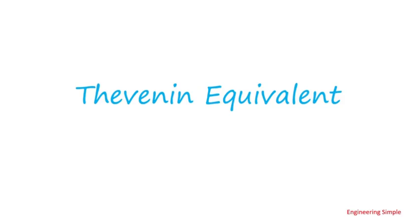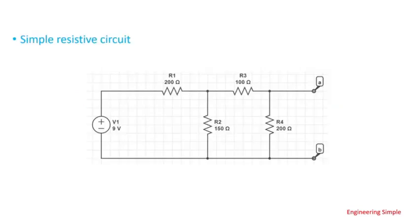In this video I'll show how to calculate the Thevenin equivalent circuit using a simple resistive circuit, but it really demonstrates the big picture. I'm assuming a simple circuit that has just resistors for simplicity, but you can do impedances or reactances. I'm assuming a source voltage V1 of 9 volts with resistors R1, R2, R3, and R4.